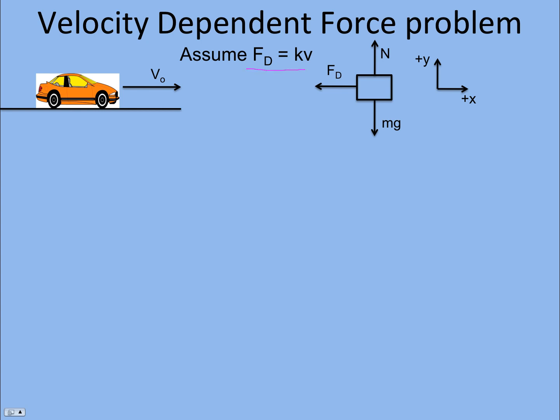We're going to assume the force of drag is a linear model. This problem gets very difficult to solve if you have kv² or something, and you definitely wouldn't be asked to do that on the AP test. So we start with Newton's second law, F = ma, looking in the x direction. On the AP test, they may say something like, write a differential equation for this problem. Differential equation means Newton's second law, F = ma — it's a free body diagram, it's F = ma.